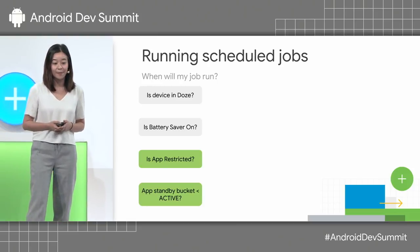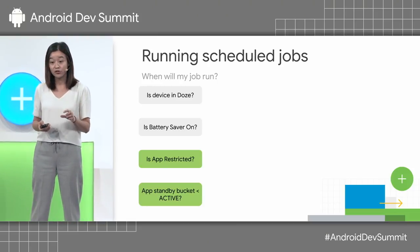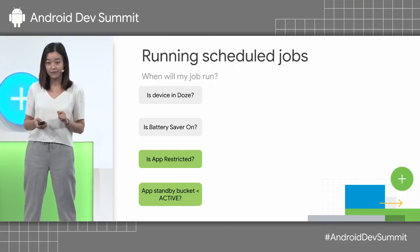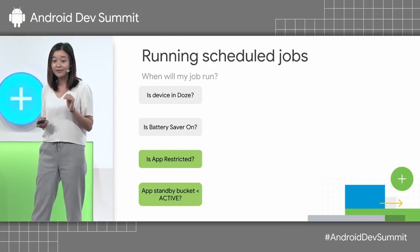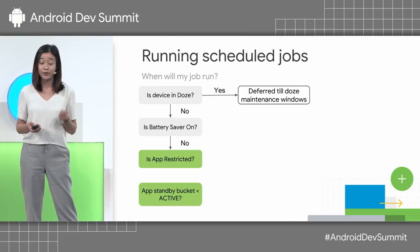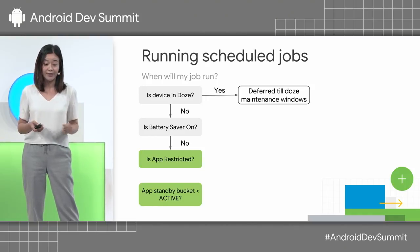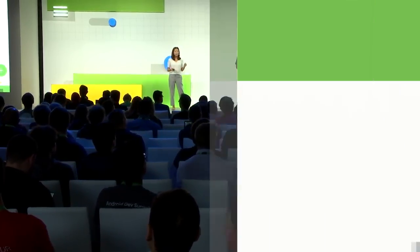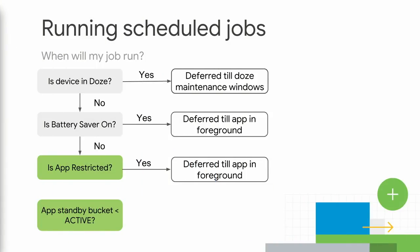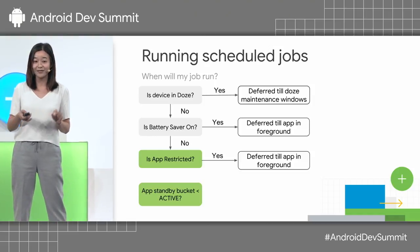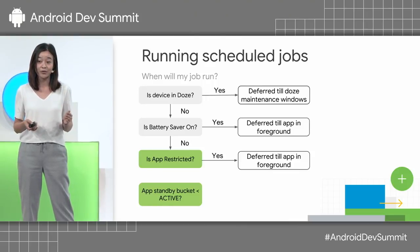First, let's look at scheduled jobs. Given that all the constraints you have on the job are satisfied, these are the features which will affect when this job will get run. If the device is in Doze, your job will be deferred to a maintenance window. If the user decides to turn on Battery Saver or app restrictions, your job will be deferred until the user opens the app or when the app is in the foreground. If none of those are true, it's up to app standby bucket or adaptive battery on Pixel. Your job could be deferred up to 24 hours — that's when your app belongs to the rare bucket, which is the worst case. Even in the worst case, your job will still get run every day.